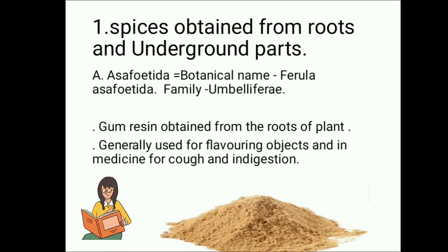Spices obtained from roots and underground parts. A. Asafetida — botanical name Ferula asafetida, Family Umbelliferae. Gum resin is obtained from the roots of the plant. Generally used for flavoring food and in medicine for cough and indigestion.